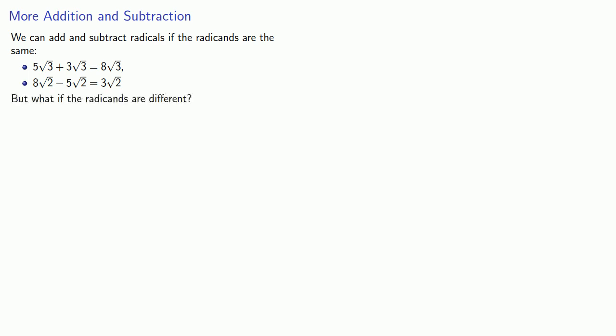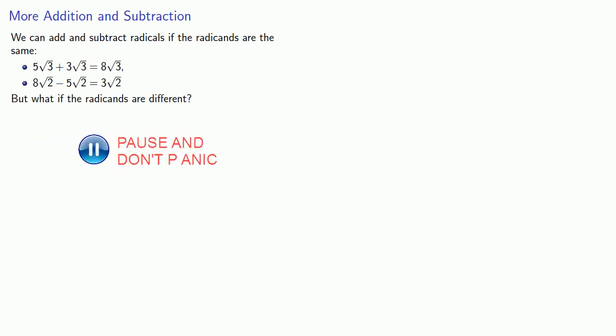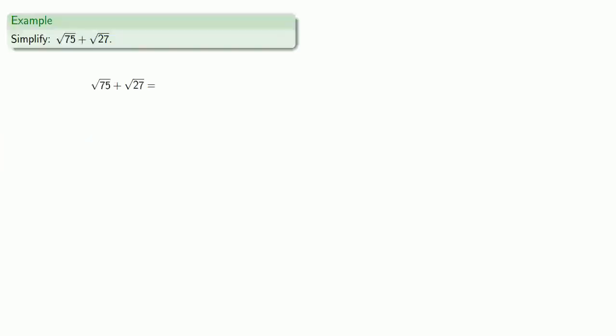But what if the radicands are different? For example, let's say we want to simplify square root of 75 plus square root of 27. The radicands are not the same, so we can't add these two directly. We have to simplify them a little bit.